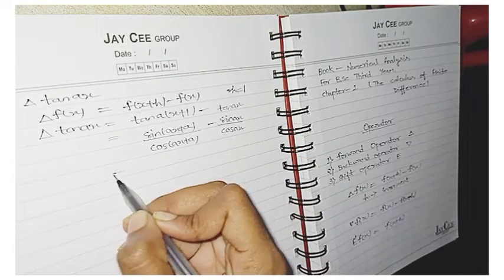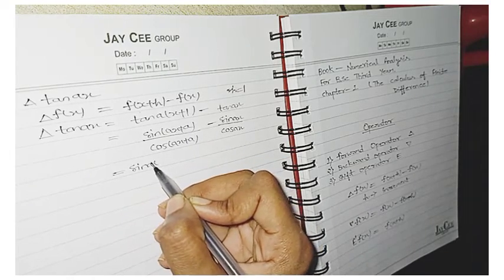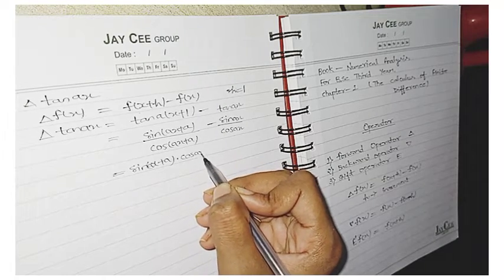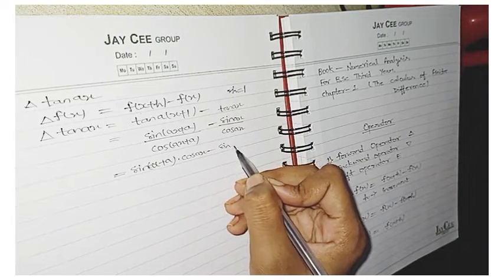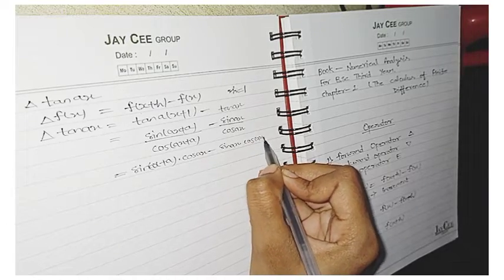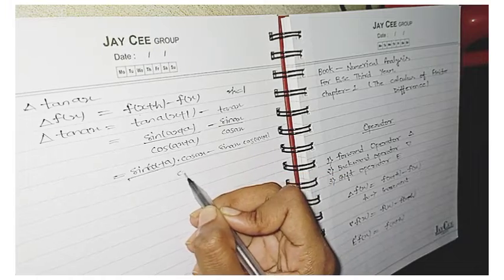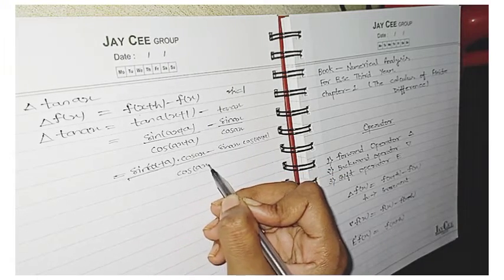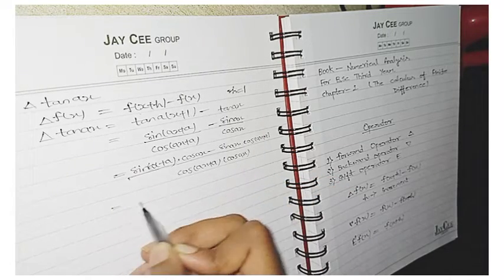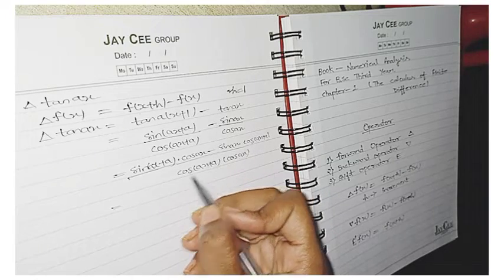So here we cross multiplication. Sin ax plus a into cos ax minus sin ax into cos ax plus a. And then upon me is cos ax. And then upon me is cos ax plus a into cos ax. So this is the formula of sin a cos b minus cos a sin b. So the formula is sin a minus b.